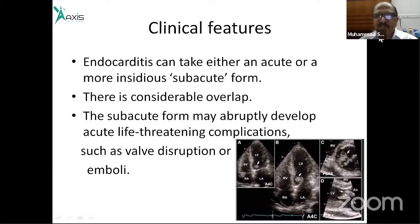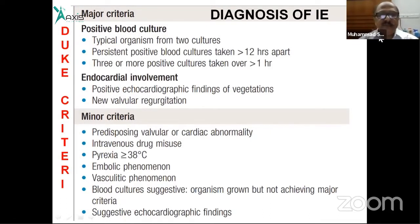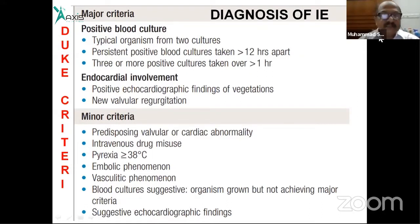Direct evidence of infection includes visualization of vegetations on echocardiogram and detection of organisms by blood culture. Vegetations can be detected by echocardiogram, and organisms can be identified by blood culture. These form the major diagnostic criteria.